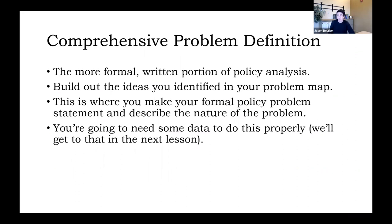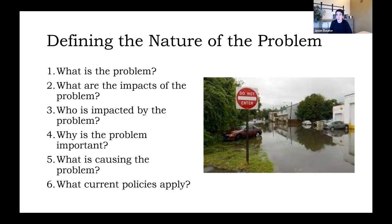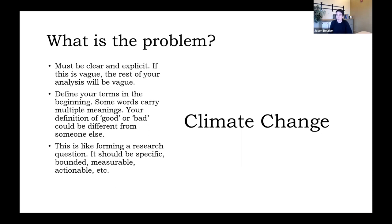This is where you'll make your formal policy problem statement and describe the nature of the problem — you'll need some data to do this properly. The key questions to consider include: what is the problem? This should be very clear and explicit — if it's vague, the rest of your analysis will be vague. The phrase 'climate change,' while a good starting point, is not clear enough and not specific enough for policy analysis, because it carries so many elements. We also want to define our terms so that our audience is on the same page. Just like forming a research question in any scientific methodology, it should be very specific, bounded geographically, and something that can be measured and acted upon.